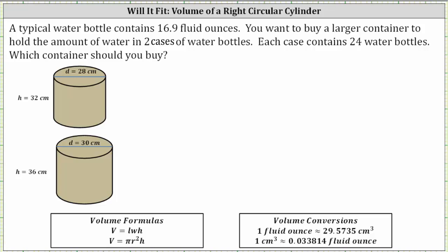We will first determine the total volume of the water in fluid ounces and then convert the total volume to cubic centimeters using the conversion that one fluid ounce is approximately 29.5735 cubic centimeters. Then we'll compare this volume to the volume of the two right circular cylinders.